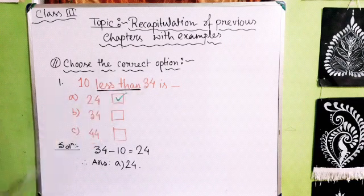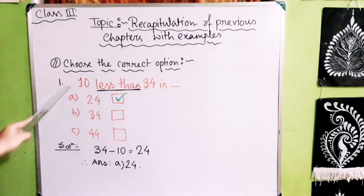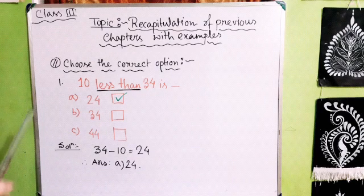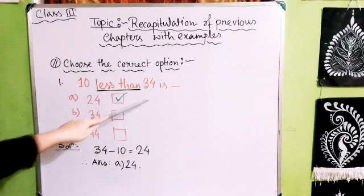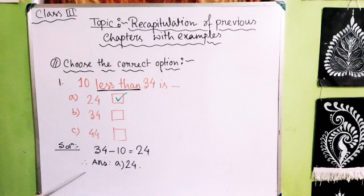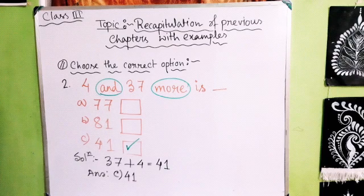Our first question is: 10 less than 34 is — Option A: 24, Option B: 34, Option C: 44. Whenever you read the question, first read it very carefully. The keyword here is 'less than,' which indicates subtraction — we move backward. So 34 minus 10 equals 24. Our first question's answer is Option A: 24.